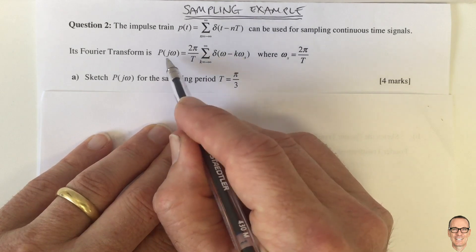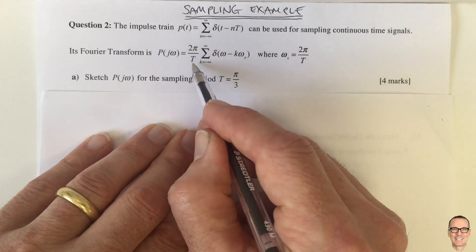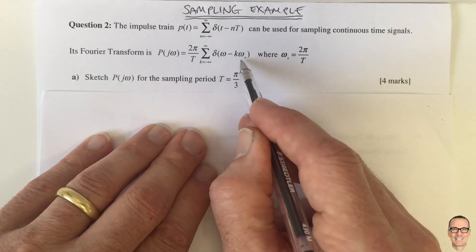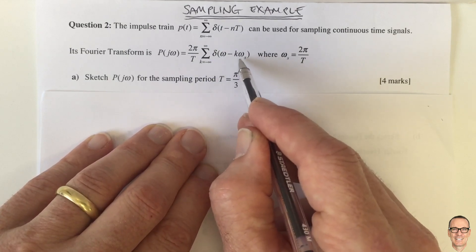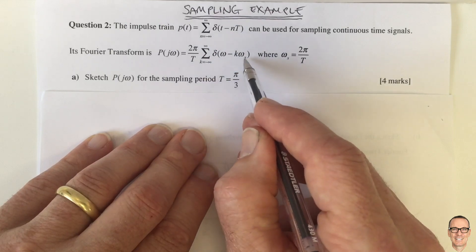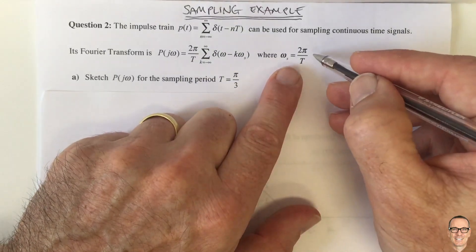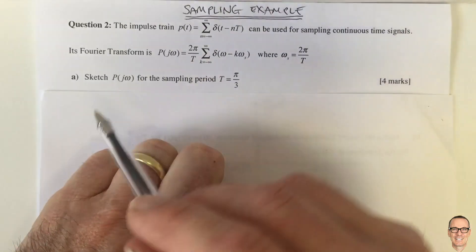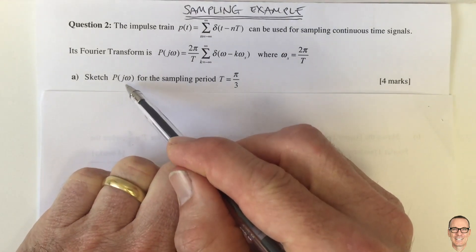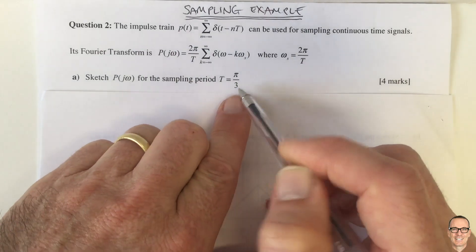The Fourier transform has the form: a scalar 2π/T times the summation of delta functions offset by integer k times omega_s. Omega_s is given by the formula 2π/T. The first part of the question asks us to sketch that Fourier transform for the sampling period T equals π/3.